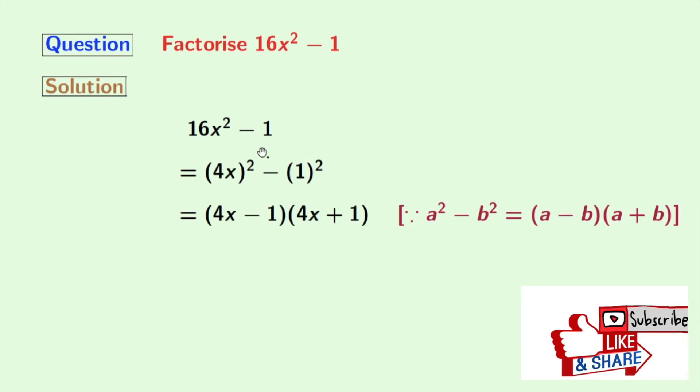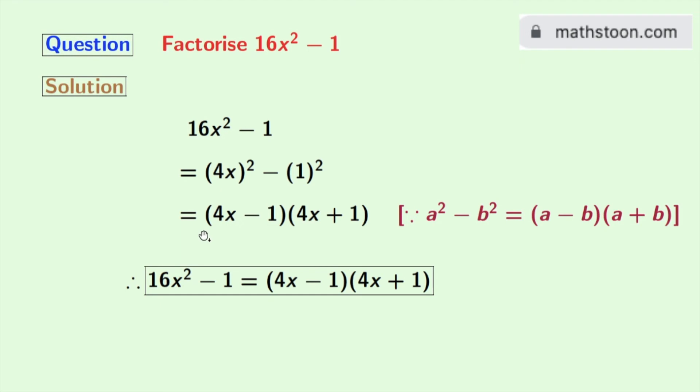Using that formula, we get (4x)² - (1)² is equal to (4x - 1)(4x + 1). So, finally, we get 16x² - 1 = (4x - 1)(4x + 1). And this is our desired factorization.